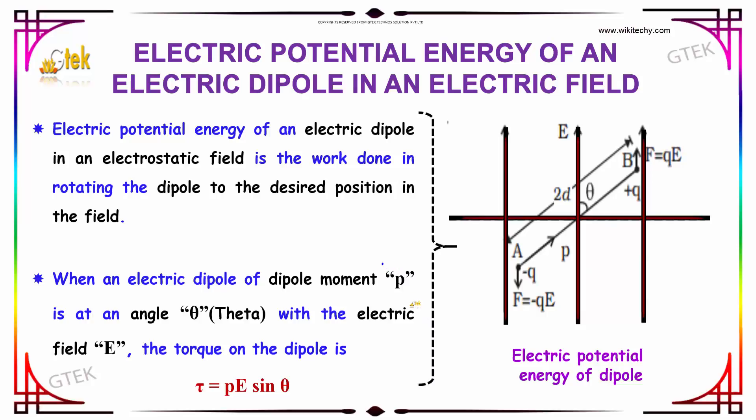When an electric dipole of dipole moment P is at an angle θ (theta) with the electric field E, the torque on the dipole is τ = pE sin θ.